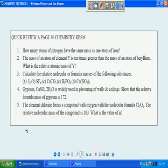And now we want to start off with question number one. Alright, so how many atoms of nitrogen have the same mass as one atom of iron? Okay, perhaps I could provide a few information here for number one.